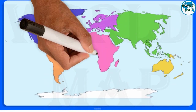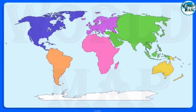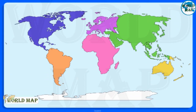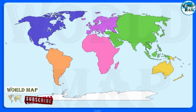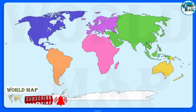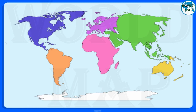A continent is one of Earth's seven main divisions of land. The continents are, from largest to smallest: Asia, Africa, North America, South America, Antarctica, Europe, and Australia.